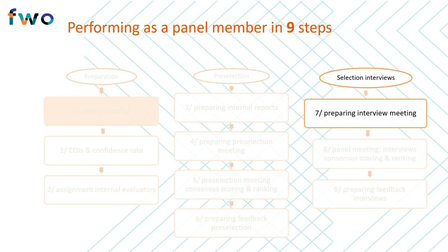In this preparation, it is useful to consult the interview scoring grid and, based on this, formulate specific questions to assess, for example, the candidate's competencies, the groundbreaking nature of the research and its methodology. During step 8, the panel convenes in Brussels and interviews the candidates. The panel issues a new score for the criterion candidate and can also adjust the project score when duly motivated. A final selection of candidates who received the fellowship is now made.